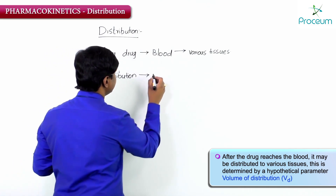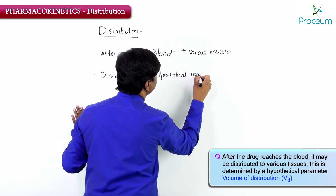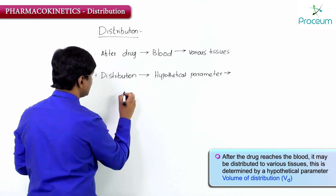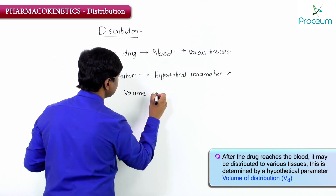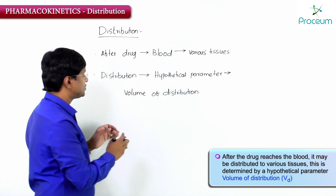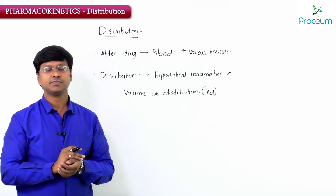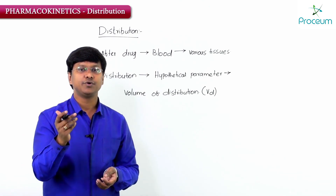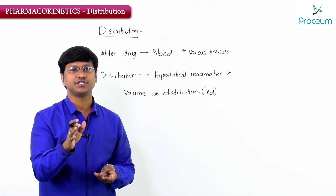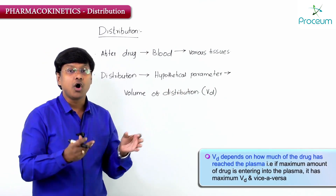This distribution into the various tissues is determined by a hypothetical parameter, and that particular hypothetical parameter is your volume of distribution. It is given by Vd. It is the volume that would be required to contain the administered dose, if the dose was evenly distributed at the concentration measured in the plasma.